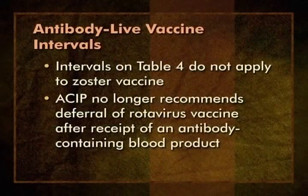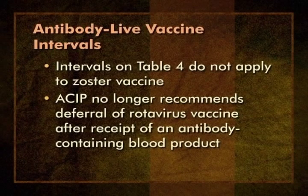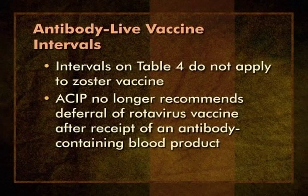We strongly suggest that you use the intervals in this table if your client has received some type of blood product and needs MMR or varicella vaccine. If MMR or varicella vaccine is given at an interval shorter than those in the table, you should either repeat the vaccine dose at a later time or use a laboratory test to verify that there has been a response to the vaccine. Administering a second dose is probably the easiest and cheapest course of action. Do not memorize the antibody table—when you get back to your office, copy it, laminate it, post it, and explain it to other members of your staff, whatever it takes so everyone knows how to use it and where to find it. Please note that the intervals on the table do not apply to zoster vaccine. As of 2009, the ACIP no longer recommends deferral of rotavirus vaccine after receipt of an antibody-containing blood product.